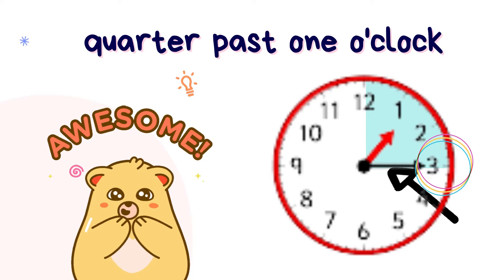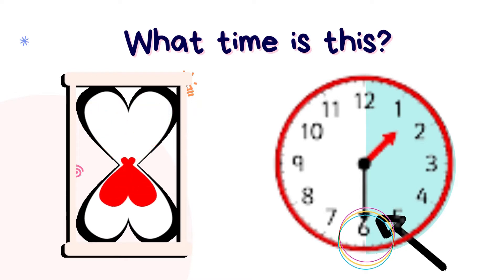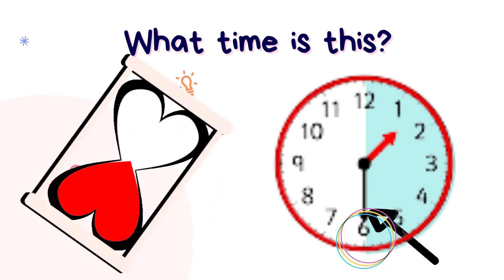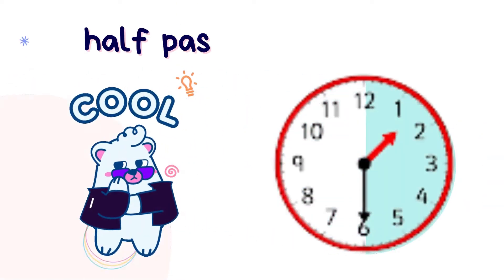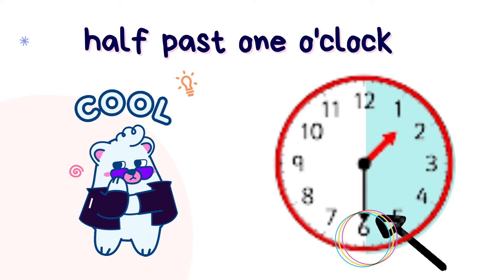Next, look carefully at this clock face. Look at the shaded portion, the minute hand and the hour hand. Can you tell what time is this? Let's check the answer — it's half past 1 o'clock. Cool! Well done if you got the answer correct.